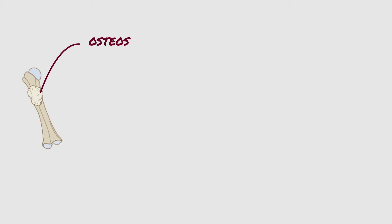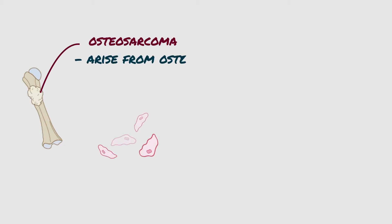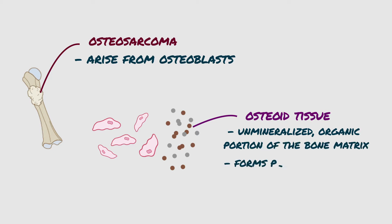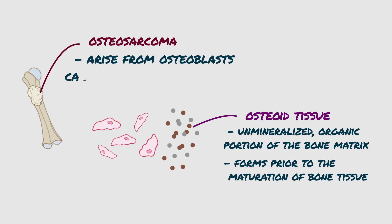Osteosarcomas arise from osteoblasts of different sizes, and these cells produce too much osteoid tissue, which is the unmineralized organic portion of the bone matrix that forms prior to the maturation of bone tissue. This is why osteosarcoma is called a bone-forming tumor.